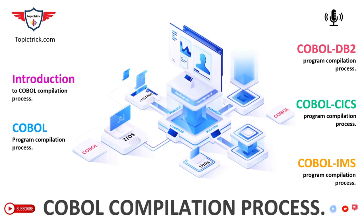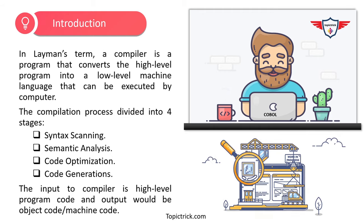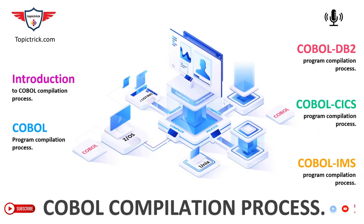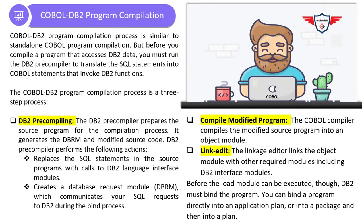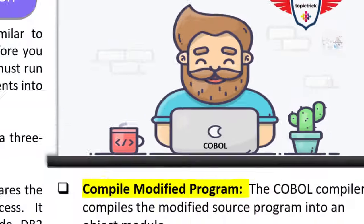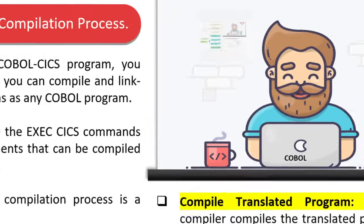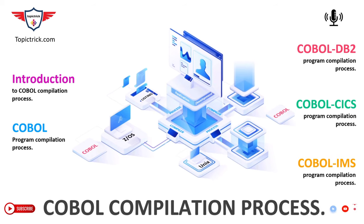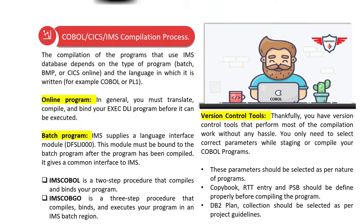This tutorial is divided into five different sections. First is an introduction to the compilation process. Then we'll talk about the steps involved in compiling a standalone COBOL program. In the third section we'll talk about the COBOL DB2 compilation process, including what is the DB2 pre-compiler and the steps involved in compiling a COBOL DB2 program. The fourth section focuses on COBOL CICS compilation process, and the last section is dedicated to COBOL IMS compilation process and version control tools.